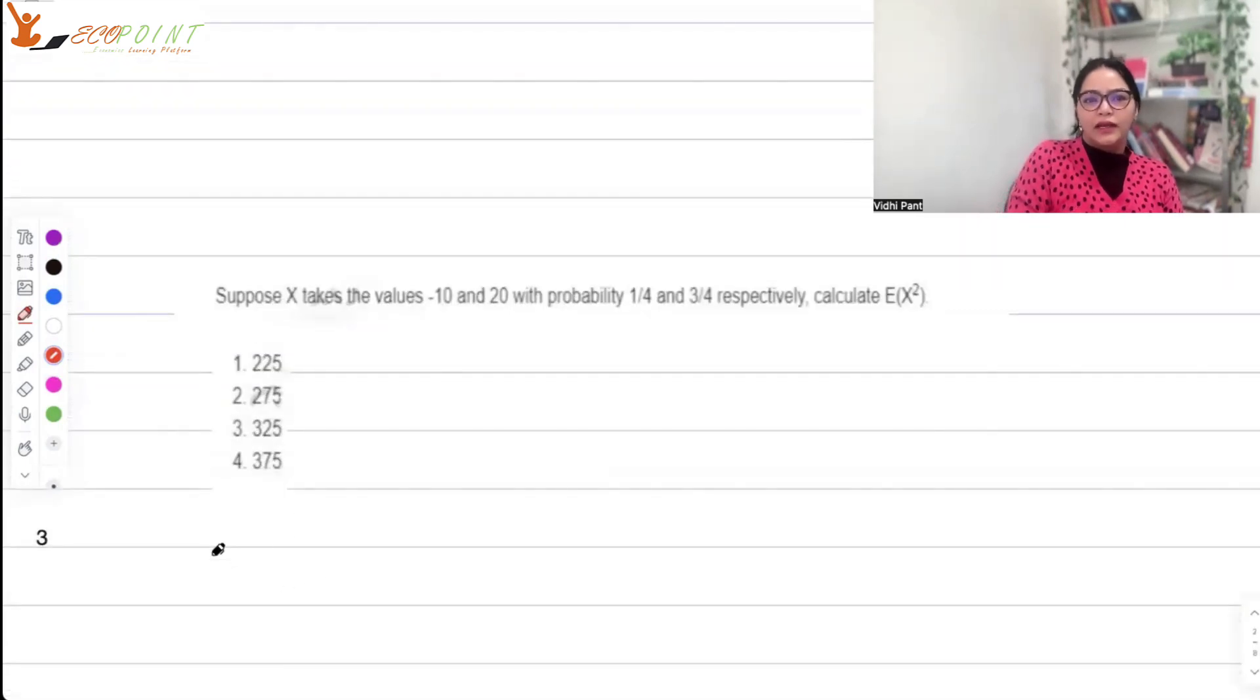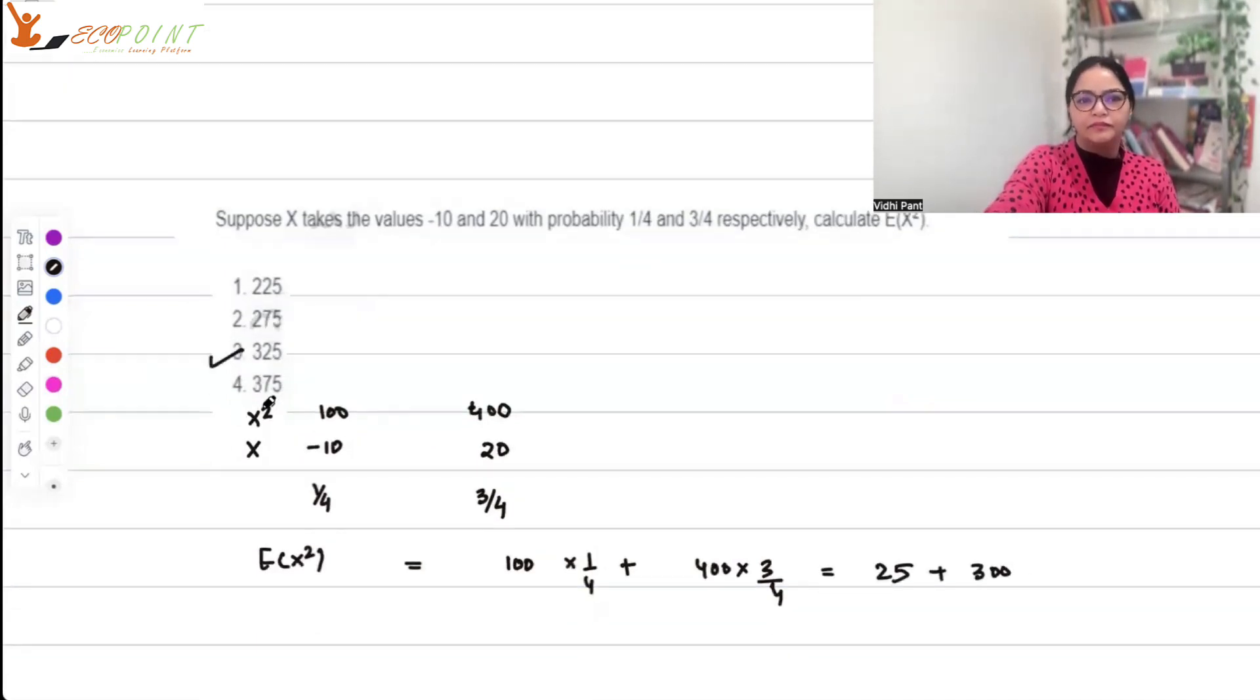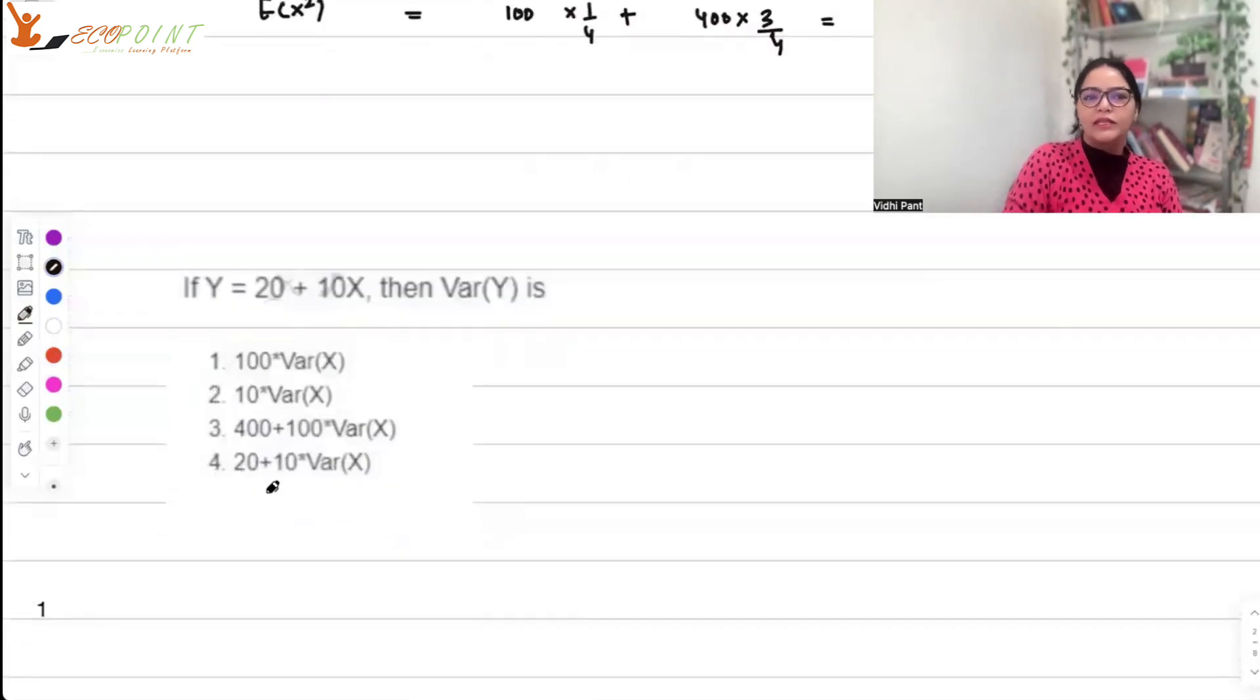Next question: X is a random variable taking values -10 and 20 with probabilities 1/4 and 3/4. What is the expected value of X²? I need to take X² as my variable, so the values are 100 and 400. Therefore E(X²) = 100 × 1/4 + 400 × 3/4 = 25 + 300 = 325, option 3.